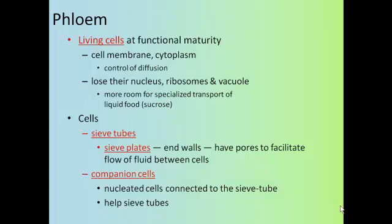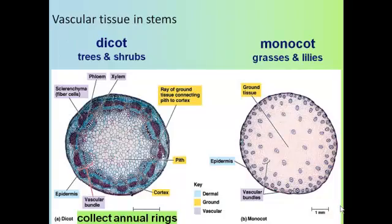The arrangement of vascular tissue in the stems of dicots and monocots is different. In a cross-section of a dicot stem, the xylem and phloem — the vascular bundles — are arranged in a ring throughout the stem. While in monocots, the vascular bundles are much more scattered throughout the stem. That's one of the ways you can tell the difference between a monocot and a dicot.